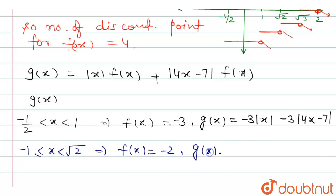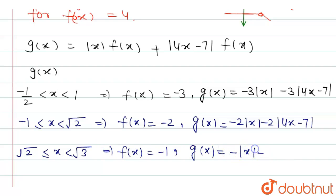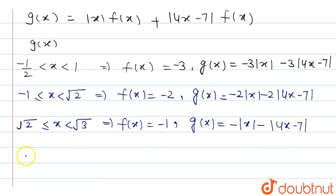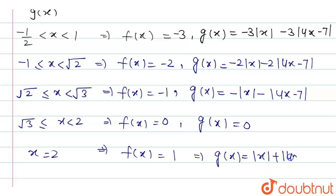When x ∈ [√2, √3), f(x) = -1, so g(x) = -|x| - |4x-7|. When x ∈ [√3, 2), f(x) = 0, so g(x) = 0. When x = 2, f(x) = 1, so g(x) = |x| + |4x-7| = |2| + |8-7| = 3. Also, since x ∈ [-1/2, 2], for all these intervals 4x < 7, so |4x-7| = 7-4x.